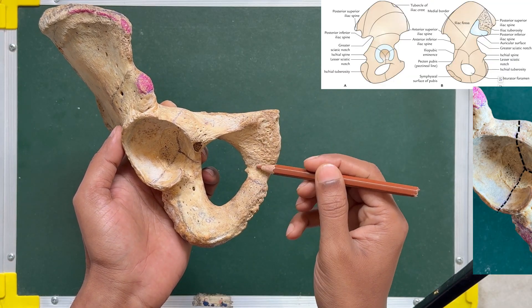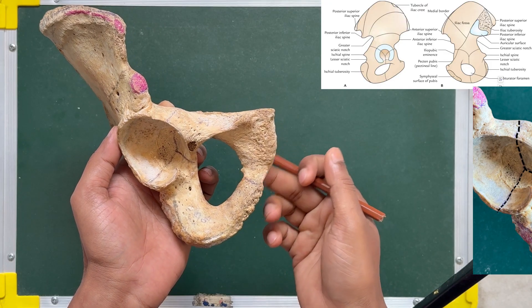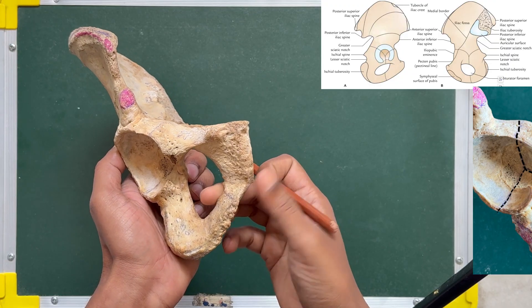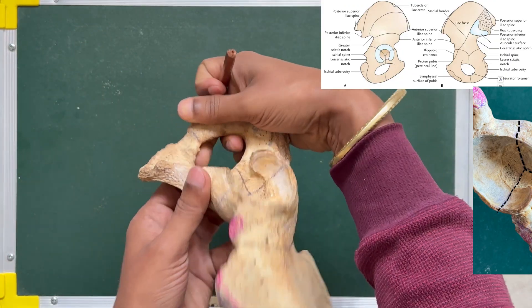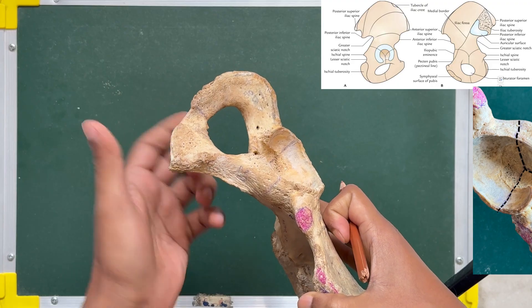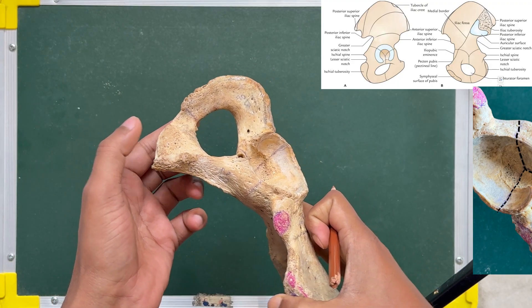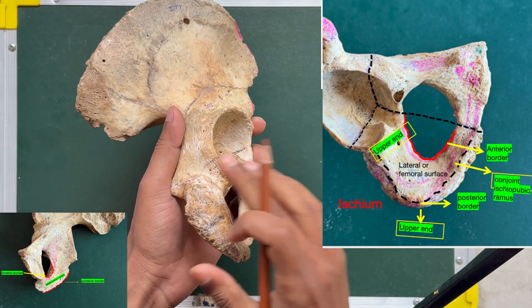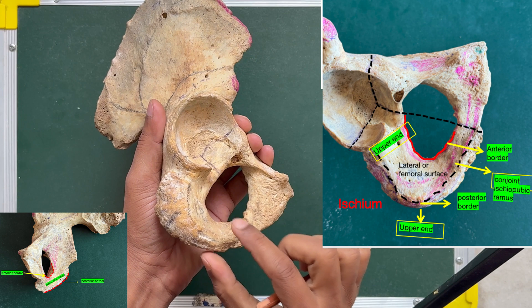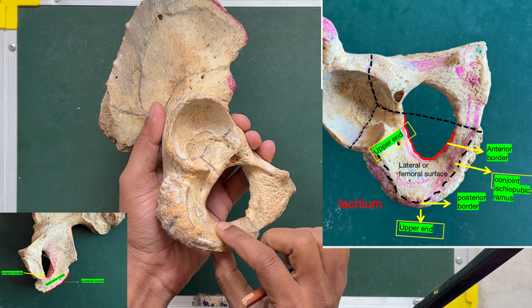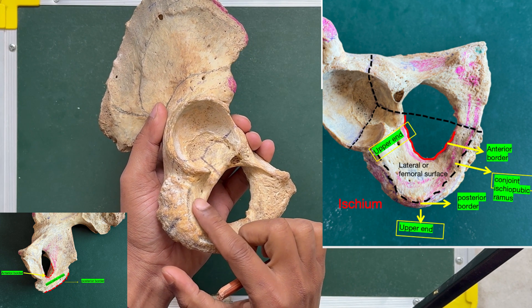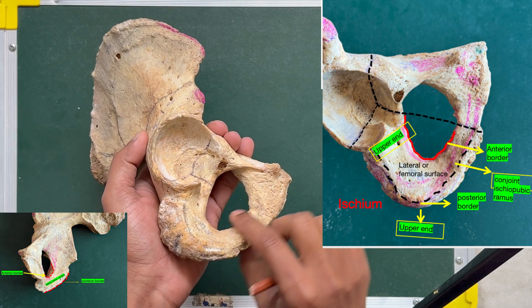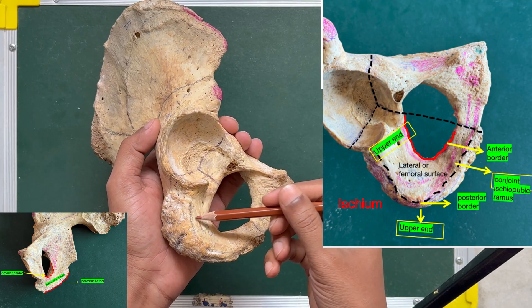The inferior ramus consists of an anterior surface, a posterior surface, an anterior border, and a posterior border. The inferior ramus joins to form the conjoint ischiopubic ramus. The ischium is comma-shaped and consists of a body part and a ramus part, which joins with the inferior ramus of the pubis to form the conjoint ischiopubic ramus.